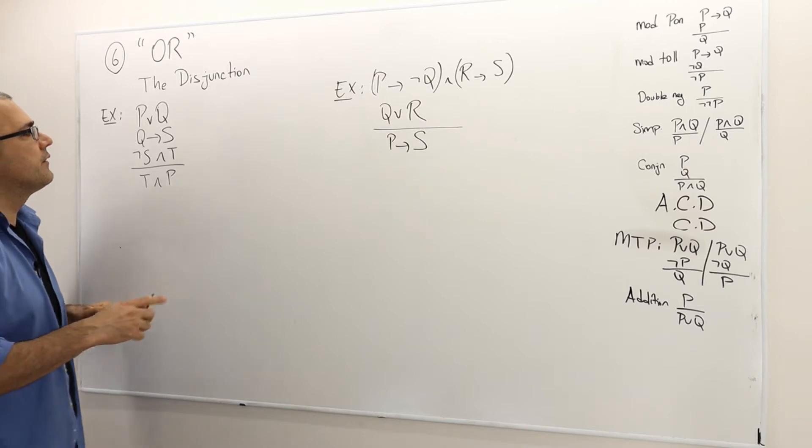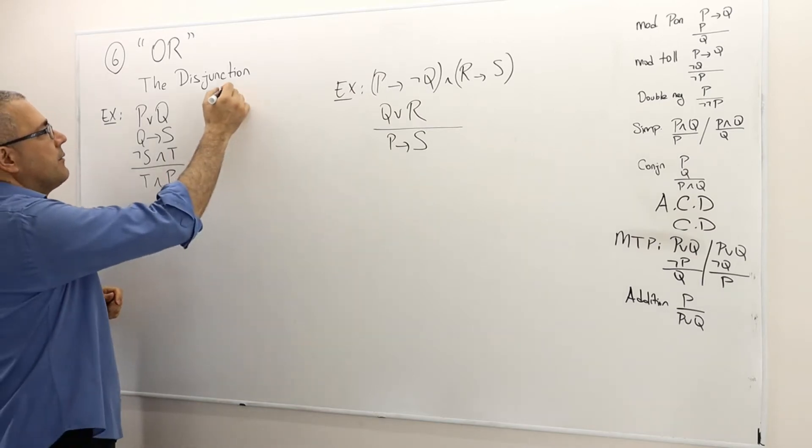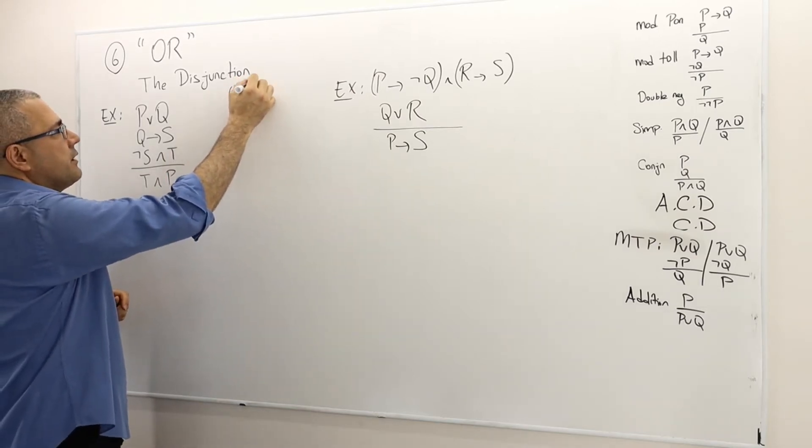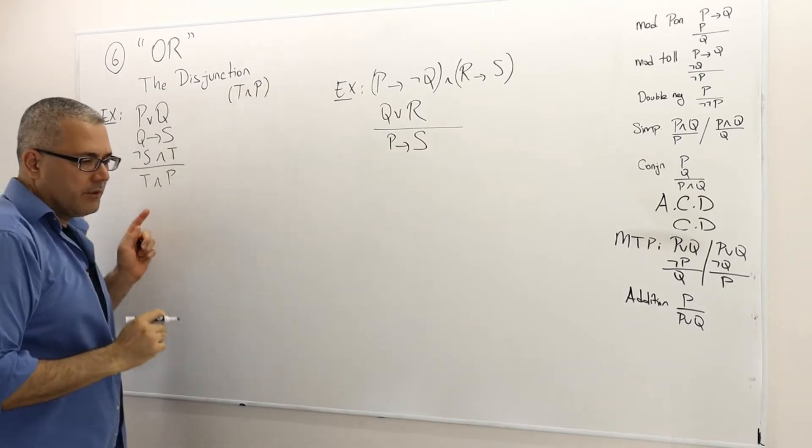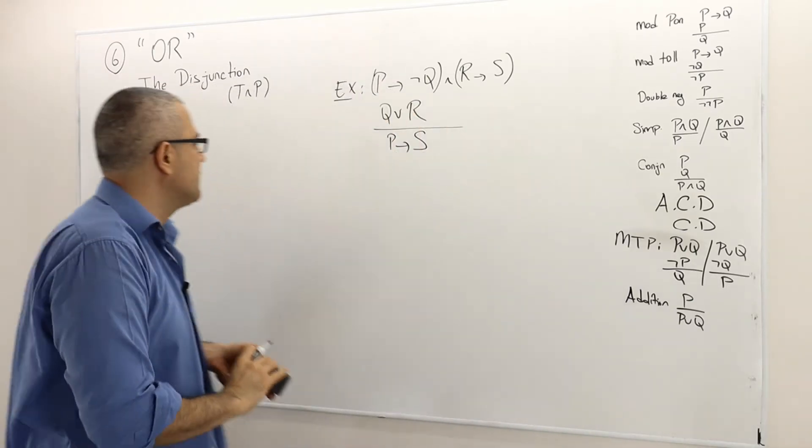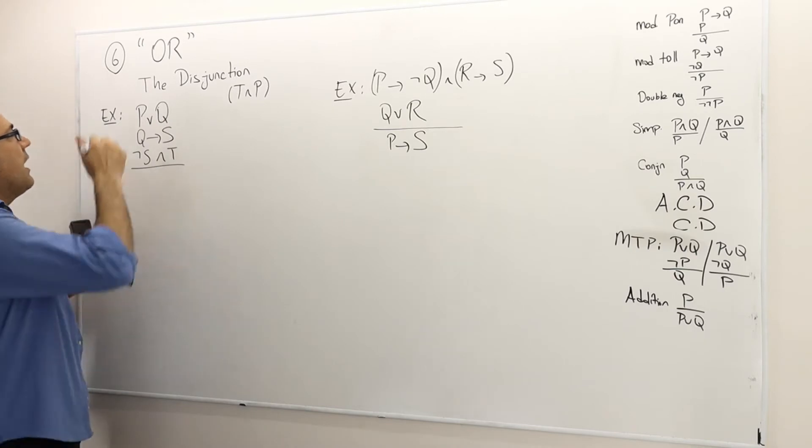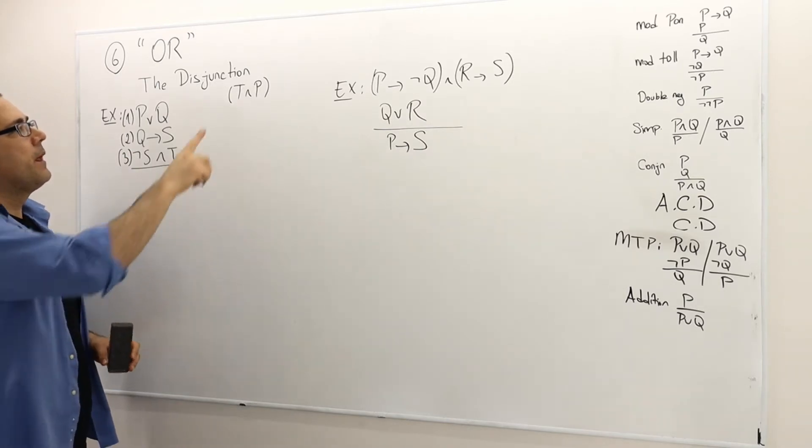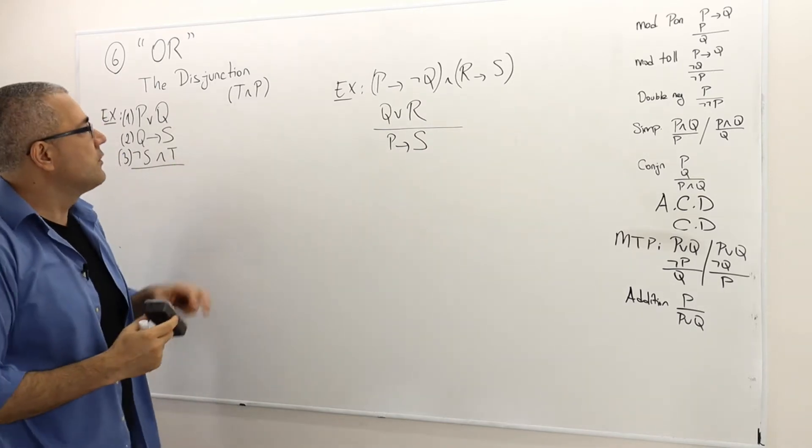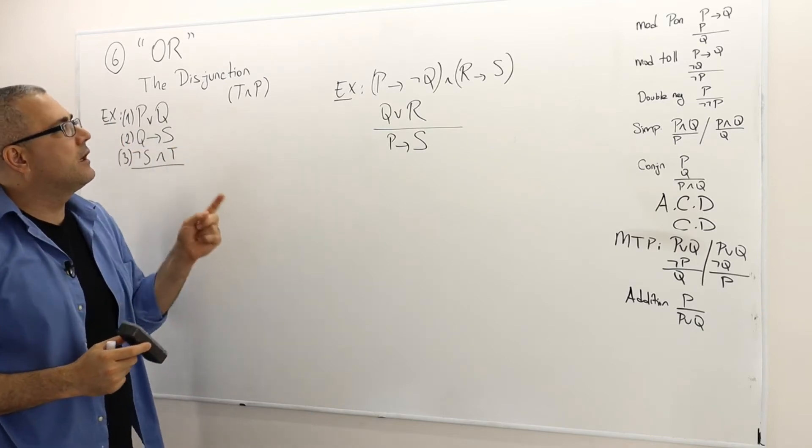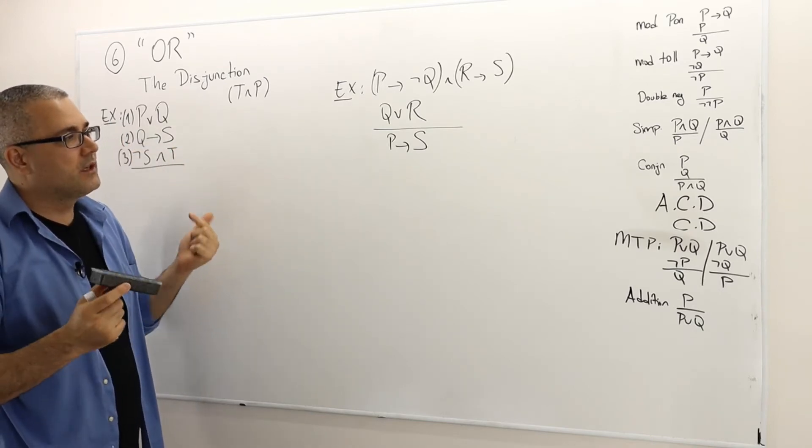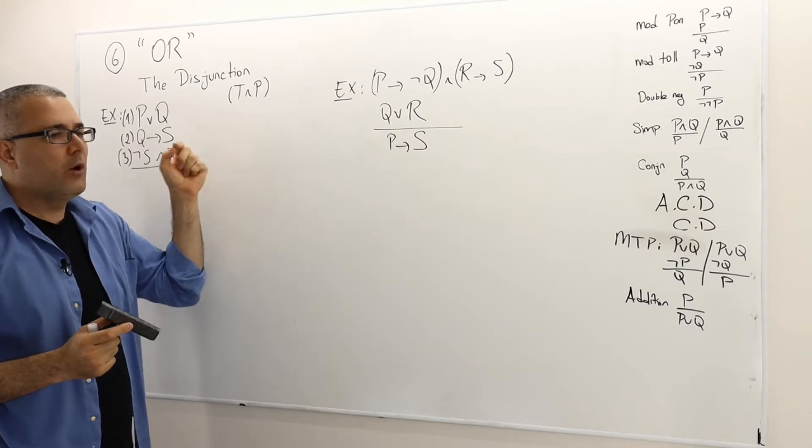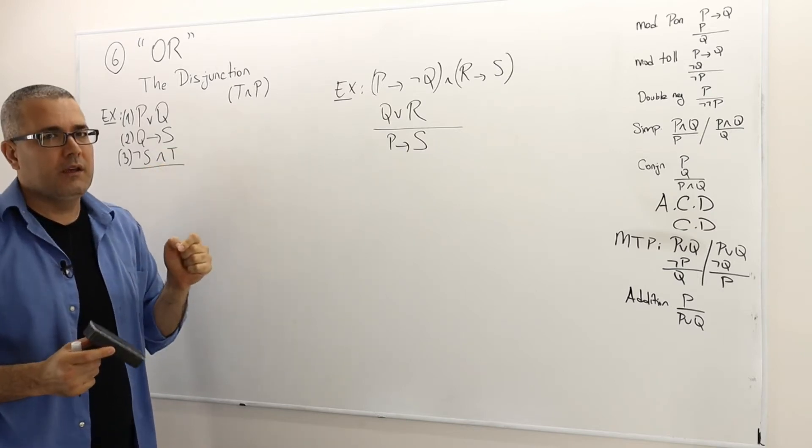So I need to prove this. Once again I'm going to write my conclusion here T and P and then I'm going to erase this because I would like to reach to this conclusion. Let's number those premises. Before I move on let's look at the conclusion. It's a conjunction. I need to prove both T and P.